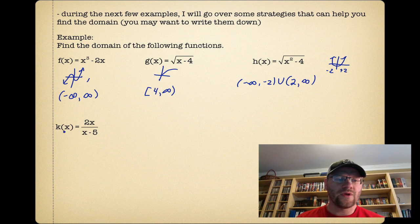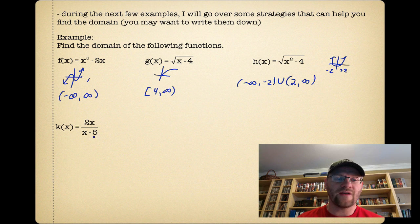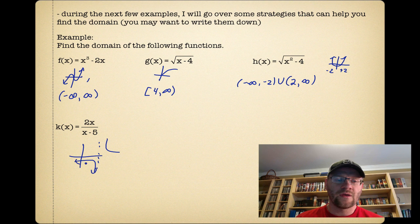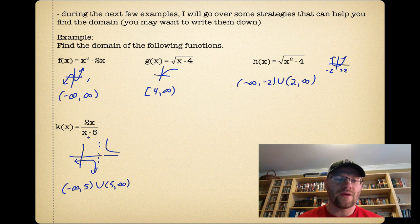For k of x equaling 2x divided by x minus 5, this is a rational function. Rational functions have denominators, and when the denominator equals zero they have vertical asymptotes. This means there's a vertical asymptote at 5, so we can't have a zero in the denominator. The domain is everything from negative infinity to 5, and then 5 to infinity.